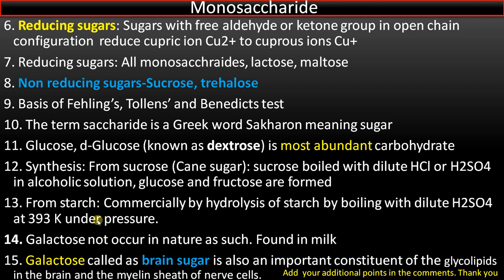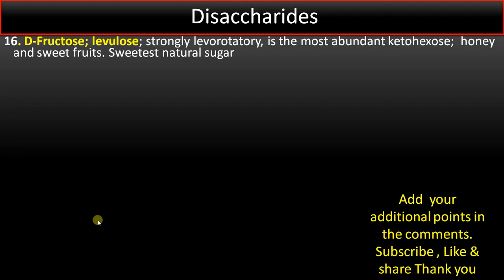Point number sixteen: fructose is also called levulose because it is strongly levorotatory. It is the most abundant ketohexose, found in honey and sweet fruits, and is the sweetest natural sugar.